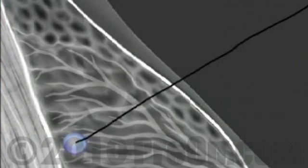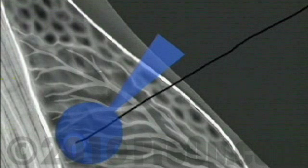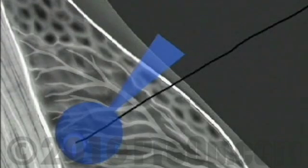Once the incision has been made, your doctor will begin cutting along the wire, moving towards the abnormality located at the end. You will feel some tugging and pulling, but you should not feel any sharp pain. If you do, please tell the doctor and you'll be given more anesthetic. Once the specimen is removed, the doctor may have it x-rayed in order to determine whether or not the correct tissue has been removed. Very rarely, the doctor may decide based on this x-ray to remove additional tissue.